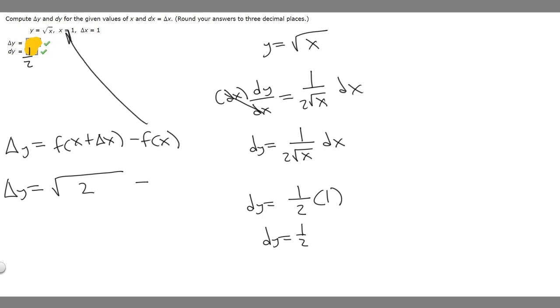So our function is the square root of x. And then x is just 1, so the square root of 1, which is just 1. So it's just the square root of 2 minus 1.